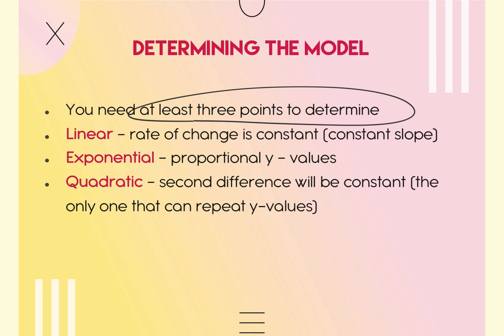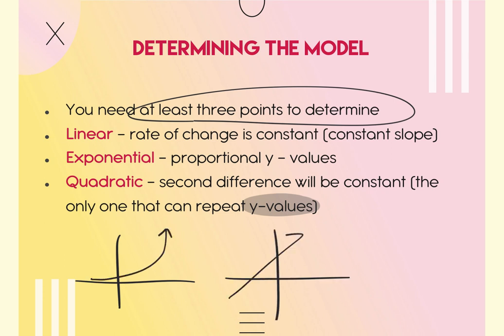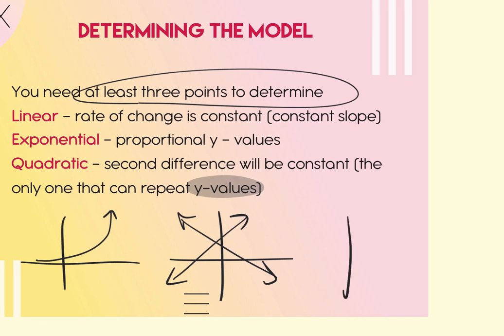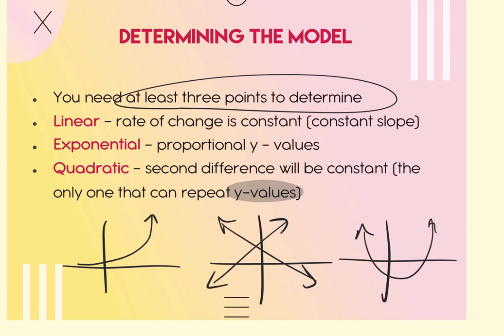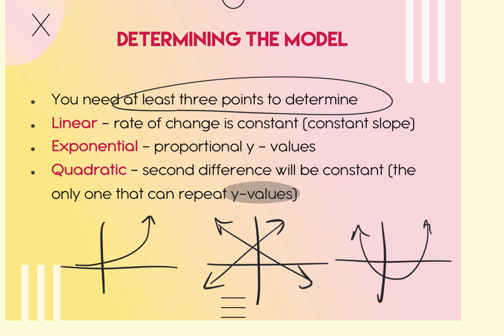The only model of these three that can repeat y-values is quadratic. Exponential always increases, and linear either increases or decreases — neither repeats a y-value. So if you see a y-value repeated with a different x, it's quadratic. But be careful — it might also be none of the three.